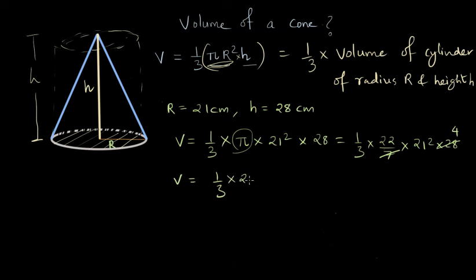Which gives us 1/3 times 22 times square of 21, which is 441, times 4. And this gives us 19,936. If you compute this using the calculator you will get this value.